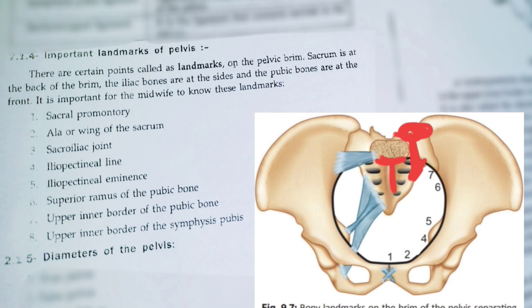Next, the sacroiliac joint — this region consists of the sacroiliac joint, so this landmark is also known as the sacroiliac joint. Next is the iliac pectineal line, also called the iliopectineal line.